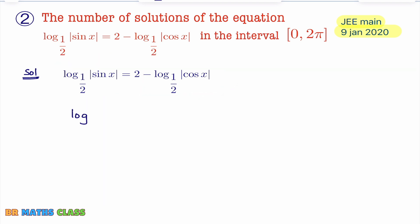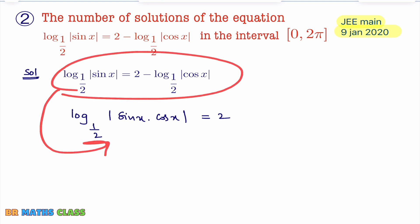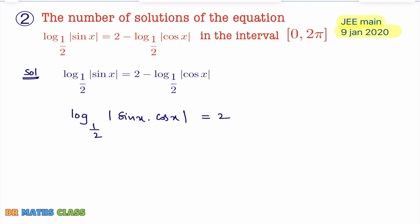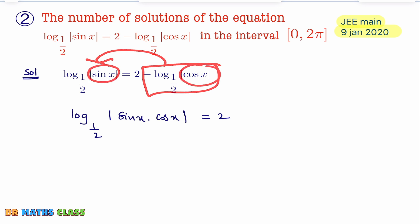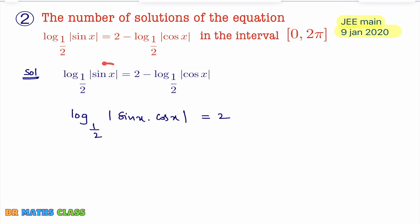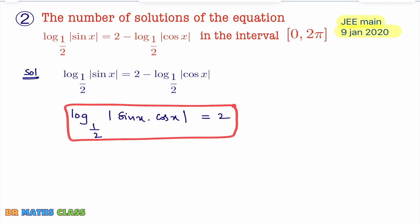So I'll write that step directly: log|sin x · cos x| base 1/2 = 2. You just take the term to the left-hand side, and then this looks like log m + log n = log(mn). From the definition of logarithm, you can simplify further.